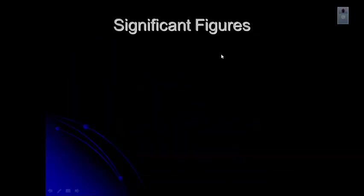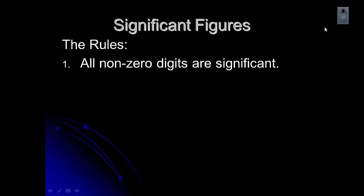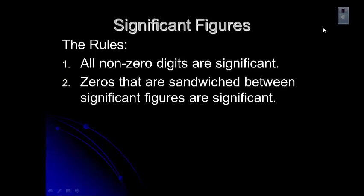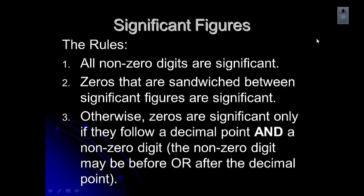Let's look at the rules for significant figures — how you figure out whether digits in a number are significant or not. First, all non-zero digits are significant. The second rule is that zeros sandwiched between significant figures are significant, so any zero between two significant figures counts as a sig fig. The third rule says zeros are significant only if they follow a decimal point and a non-zero digit. It doesn't matter whether the non-zero digit or the decimal point comes first — the zero has to come after both of them.